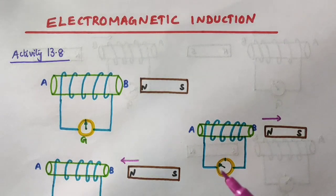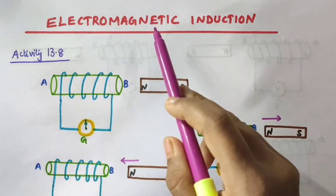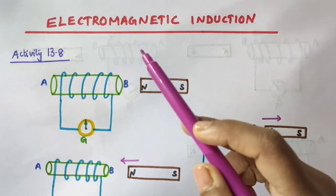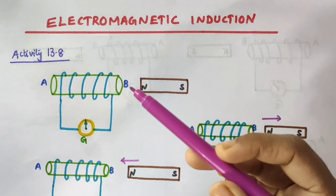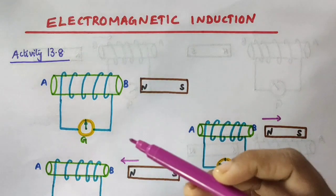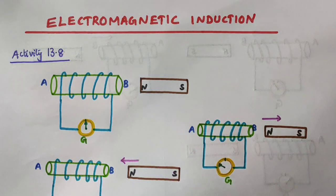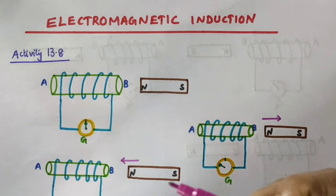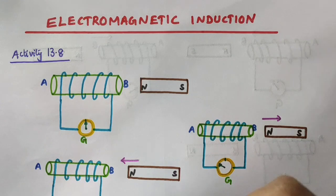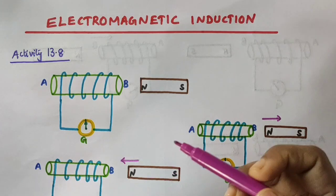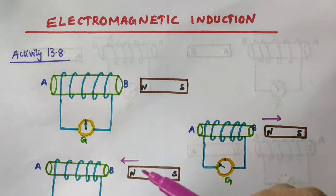Hello everyone. In this video we are going to discuss about electromagnetic induction. We will discuss about Fleming's right hand rule and we will discuss about activities 13.8 and 13.9. An English physicist Michael Faraday made an important breakthrough by discovering how a moving magnet can be used to generate electric currents. In this video we are going to discuss more about this.